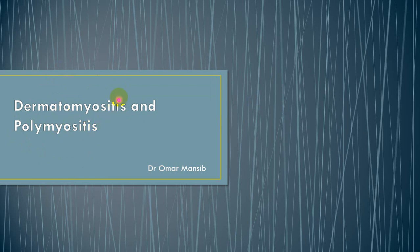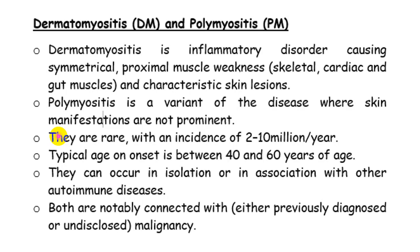As the name implies, it is inflammation of skin (dermato) and muscles. Dermatomyositis is an inflammatory disorder causing symmetrical proximal muscle weakness, but not exclusively affecting skeletal muscle. The disease can also affect cardiac or smooth muscle, so other internal organs can be involved. It is usually associated with characteristic skin lesions as we will see later on.